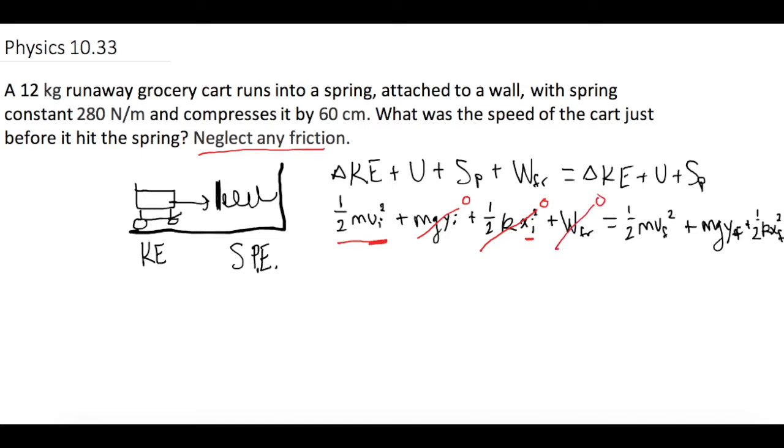The final velocity of the cart, when it fully compresses that spring is zero. So one half M times V final, V is zero, goes to zero. We don't have any change of Y again, so that's zero. And then one half K X final, it's compressed at the very end, so we do have that.